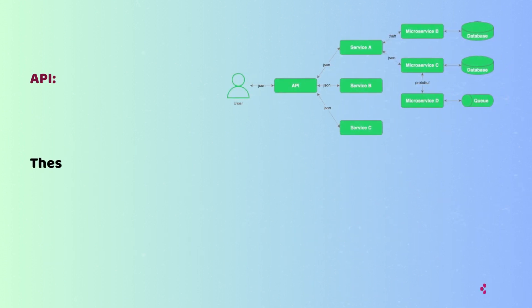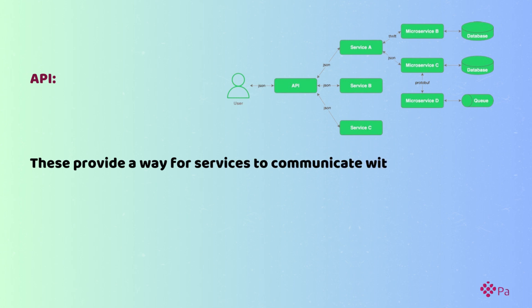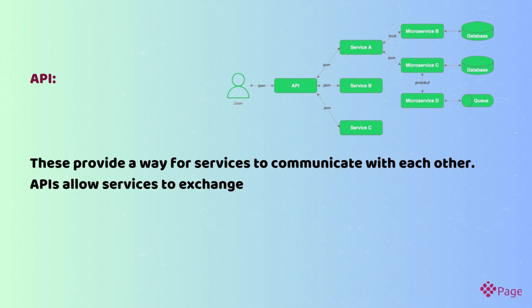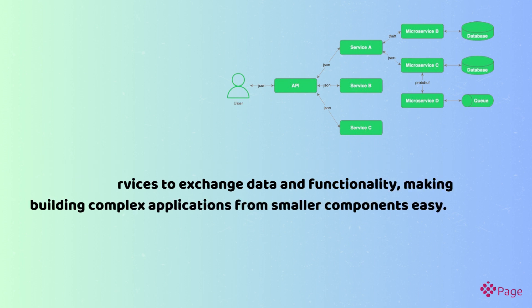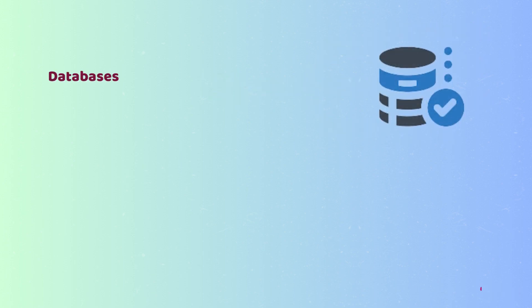APIs provide a way for services to communicate with each other. APIs allow services to exchange data and functionality, making it easy to build complex applications from smaller components.